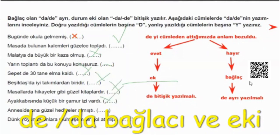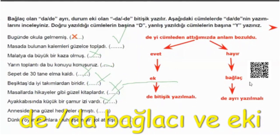Annesi de, annesi ona güzel hediyeler almıştı. Bozuldu mu anlamımız? Annesi... hayır. O zaman hayırdan gidiyoruz. Görevi neymiş bunun, bağlaç mı ek miymiş? Ayrı yazılması lazımdı. Yani görev ek mi, bağlaç mı? Bağlaç. Ayrı yazılması gerekiyordu değil mi? Peki nasıl yazmış orada? Evet, ama birleşik yazmış. O zaman yanlış, çok güzel.